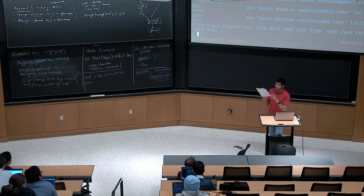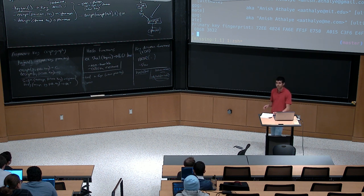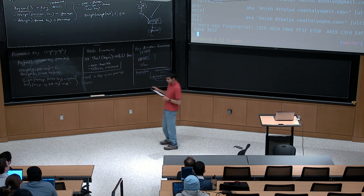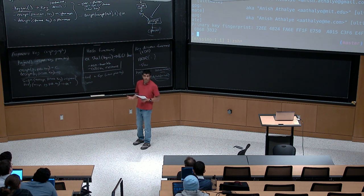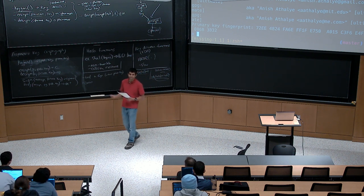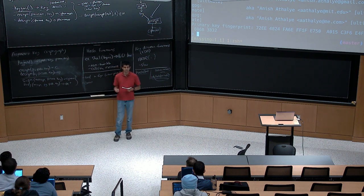One final thing: key distribution. This is an interesting side effect of asymmetric key cryptography. It enables a lot of interesting functionality — I can post my public key on the internet, you can find it and send me encrypted email — but how do you know that the public key you found is actually mine? There's a bootstrapping problem here. One solution is to exchange information out of band: if you want to send me encrypted email, just talk to me after class, I'll give you my public key on a piece of paper, and since you're talking to me in person, you know it's actually my public key.